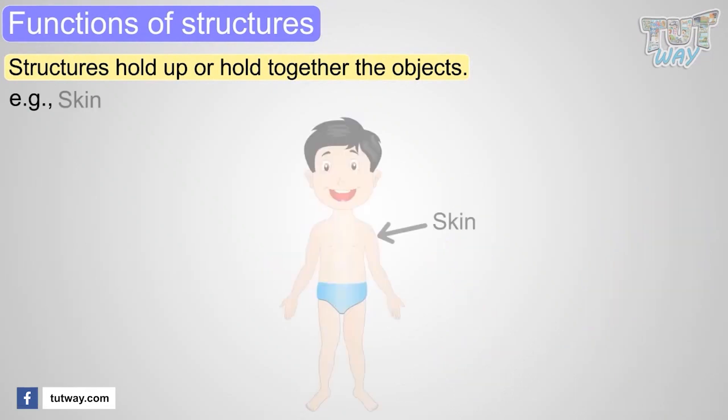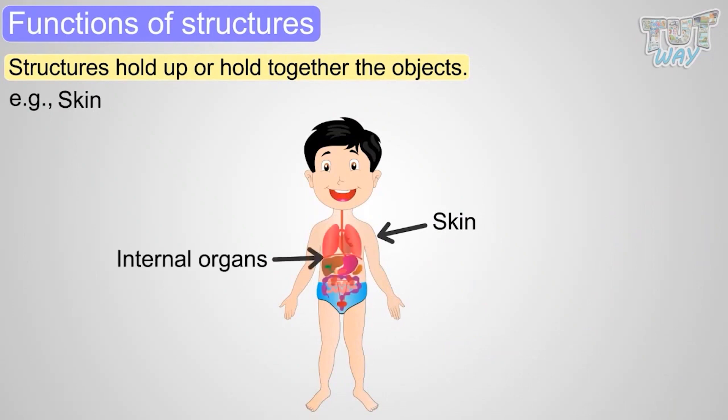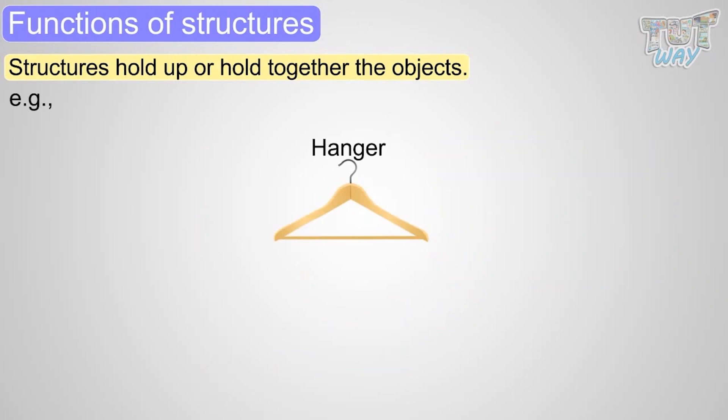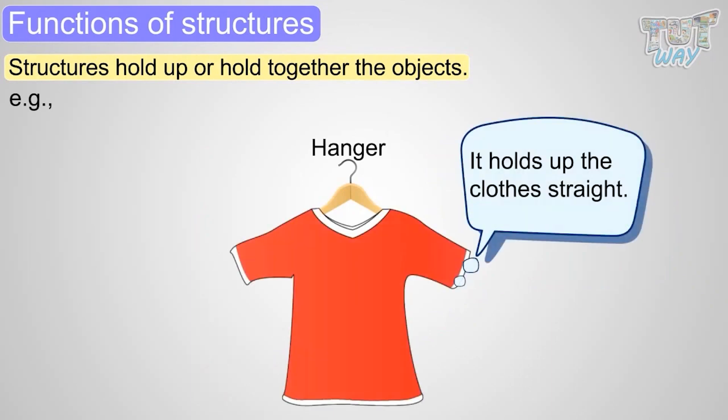Our skin is a natural structure. It holds all our internal organs. Our skin is waterproof, that is, it does not let water enter our skin. It is stretchable like rubber. Hanger. A hanger is a structure too. It holds up the clothes straight.